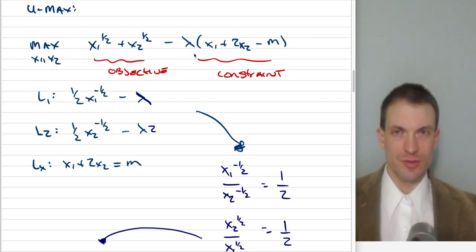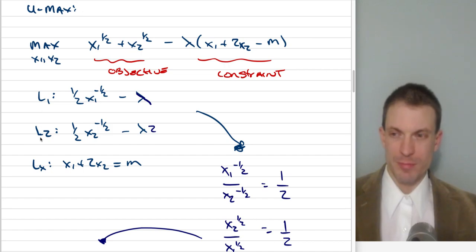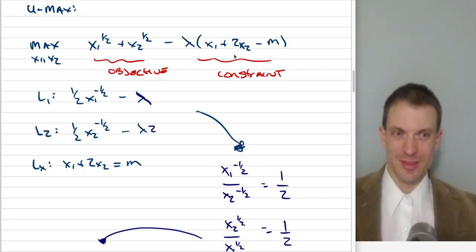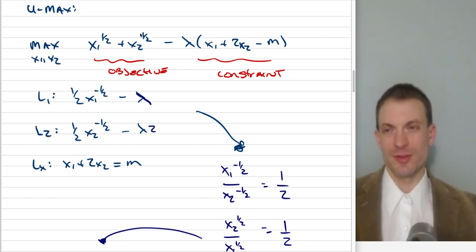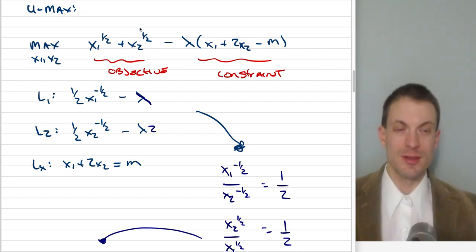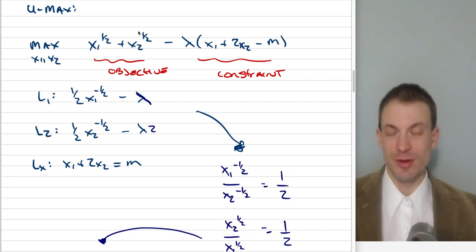This is the objective function and this is the constraint. I'm going to take the partial with respect to good one and the partial with respect to good two to get the tangency condition. Once you've got the tangency, you plug that into the constraint, which gives your optimal demands. You then plug those into the objective function to get part b — the indirect utility function.